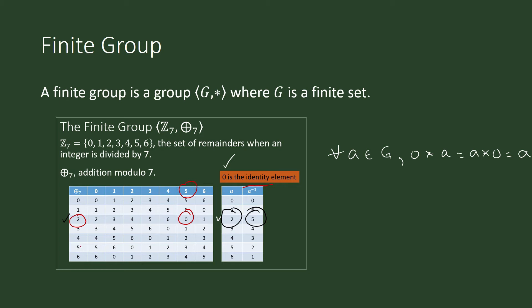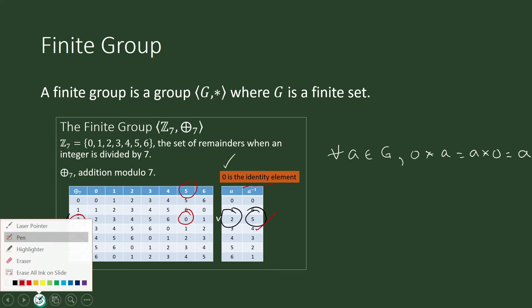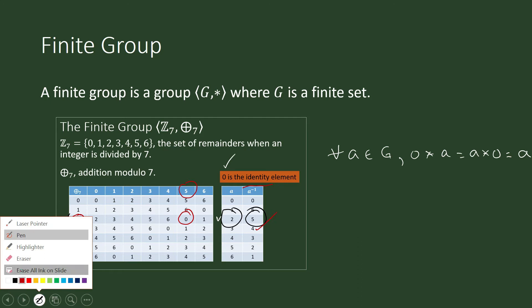What is the inverse for 5? It's also 2. How about 3 — what is the inverse for 3 under addition modulo 7? It's going to be 4, because 3 plus 4 addition modulo 7 is equal to 0.